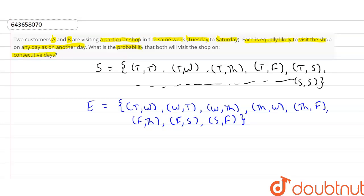This will be our sample space and our event E. Now we know that the probability will be given by the number of elements of E, which is 8, divided by the number of elements of S, which is 25. So the probability comes out to be 8 by 25.